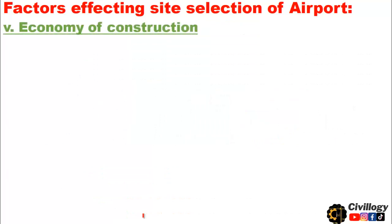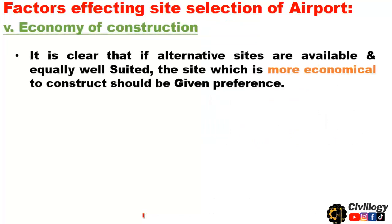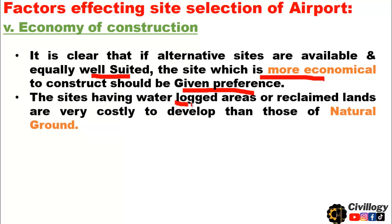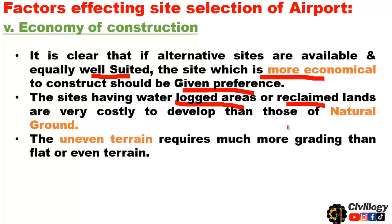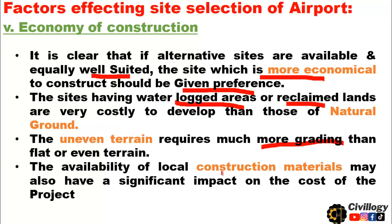The fifth point is economy of construction. If alternative sites are available and equally well suited, the site which is more economical to construct should be given preference. Sites having waterlogged areas or reclaimed lands are very costly to develop compared to natural ground. Uneven terrain requires much more grading than flat or even terrain, and the availability of local construction materials may also have a significant impact on the cost of the project.